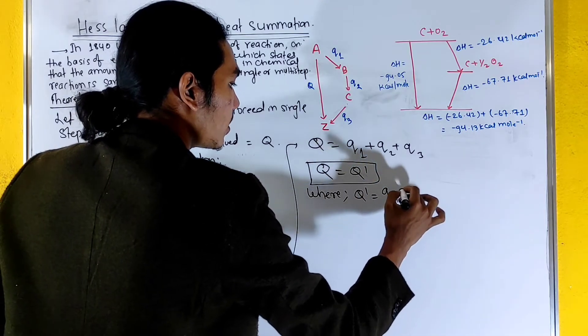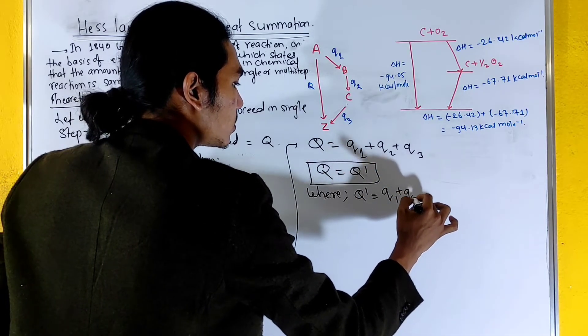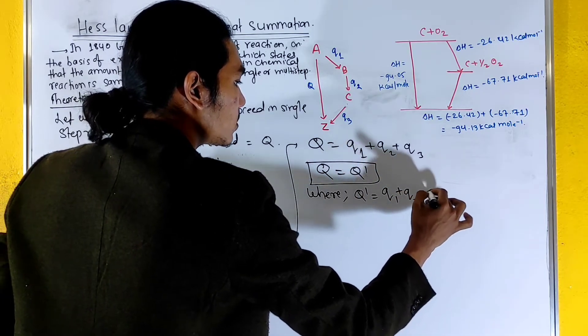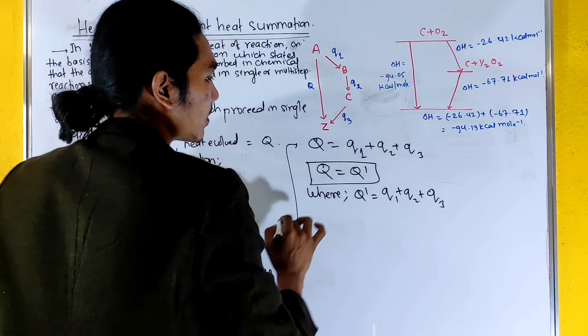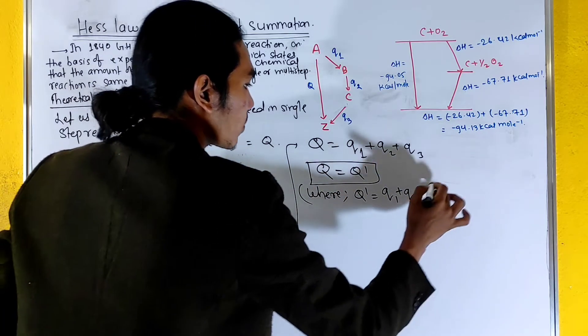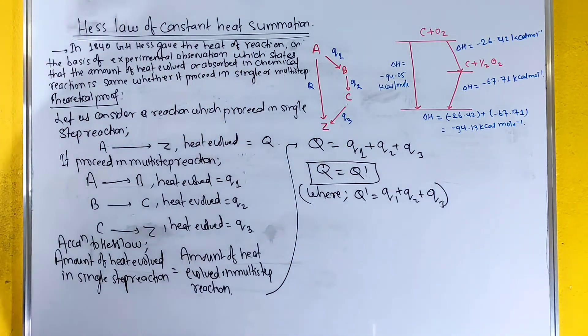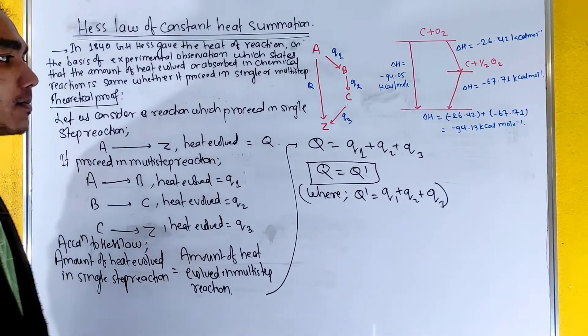Suppose q₁ plus q₂ plus q₃ equals Q. So q is equal to q prime.